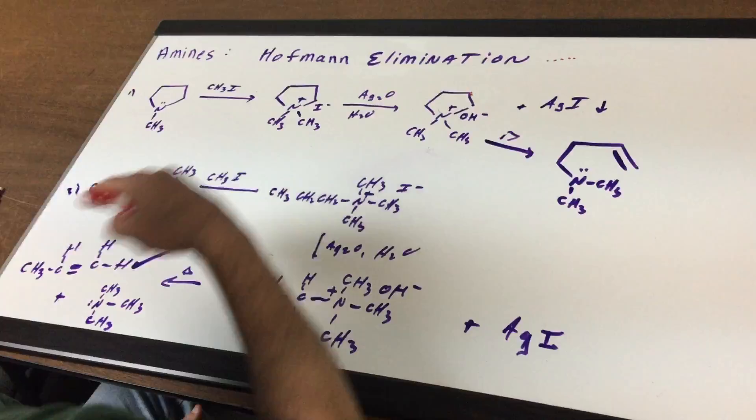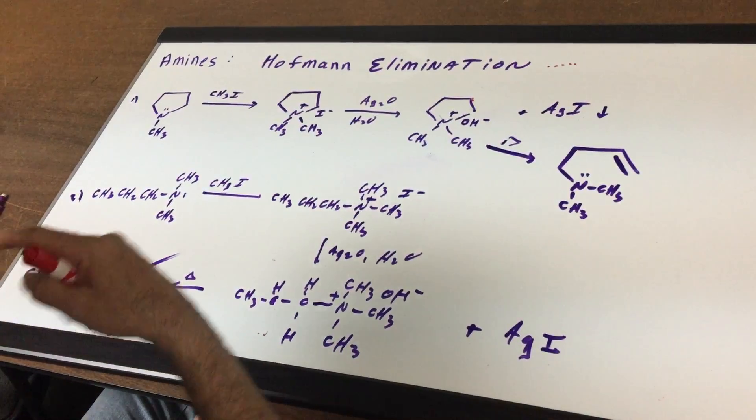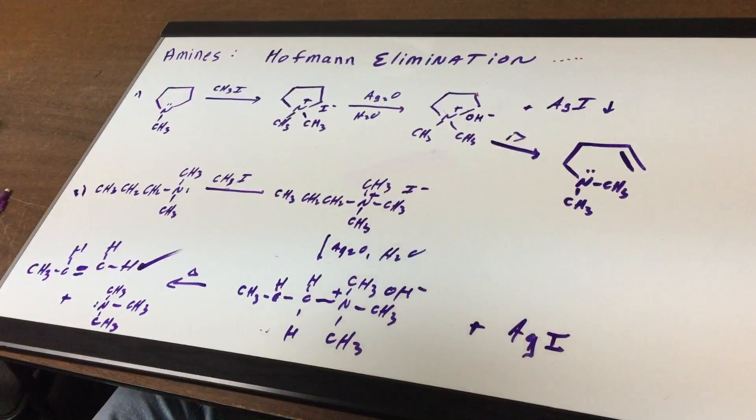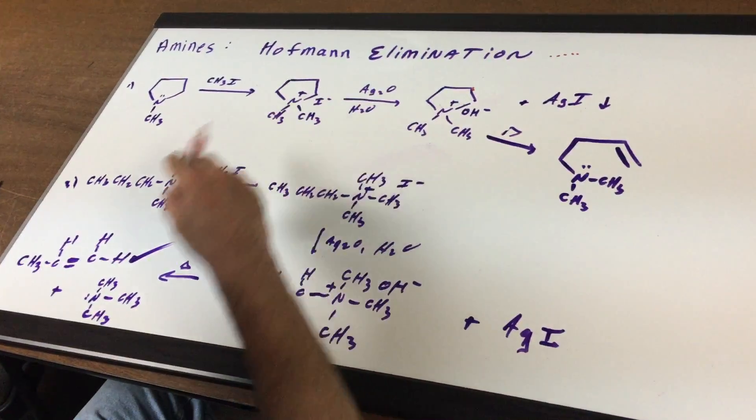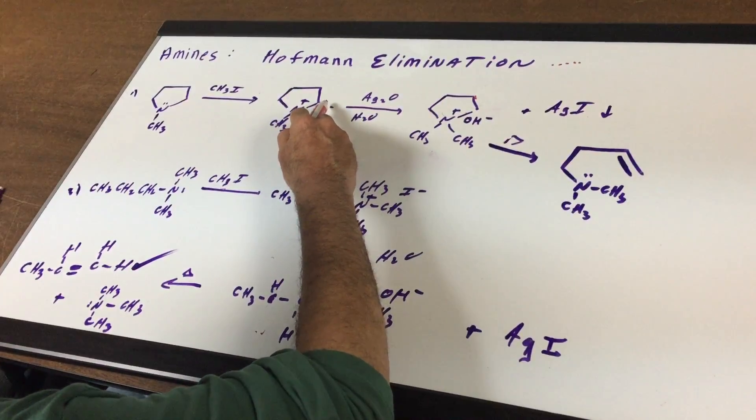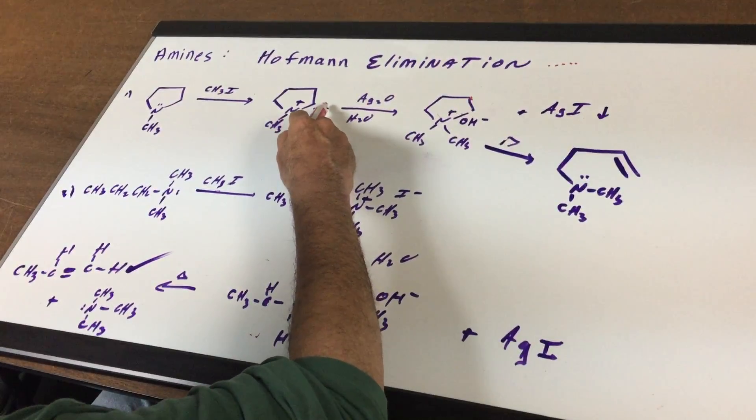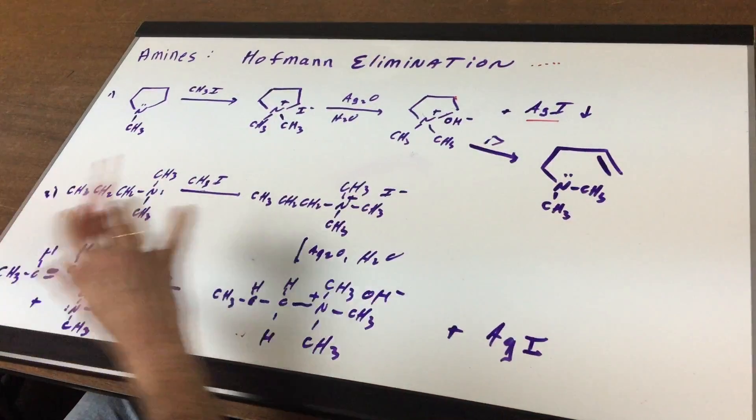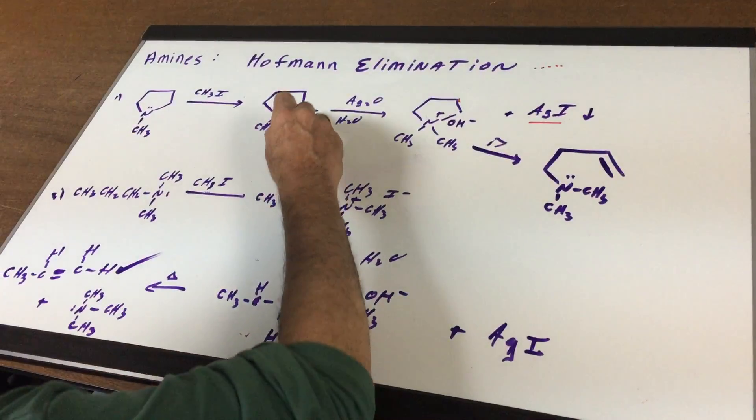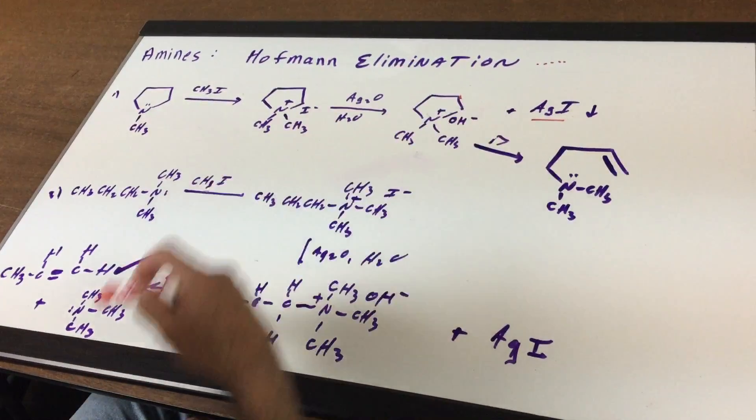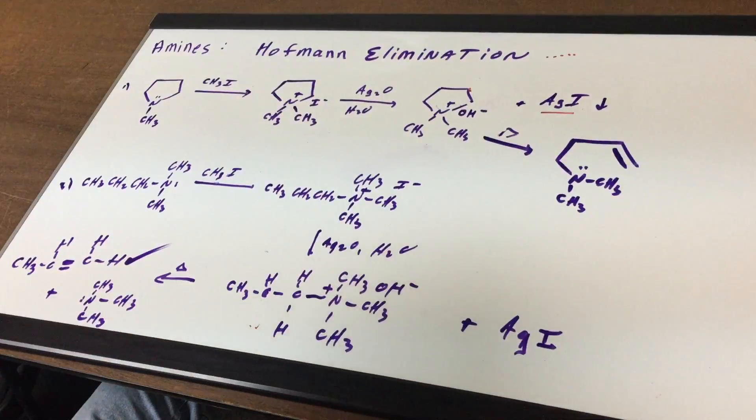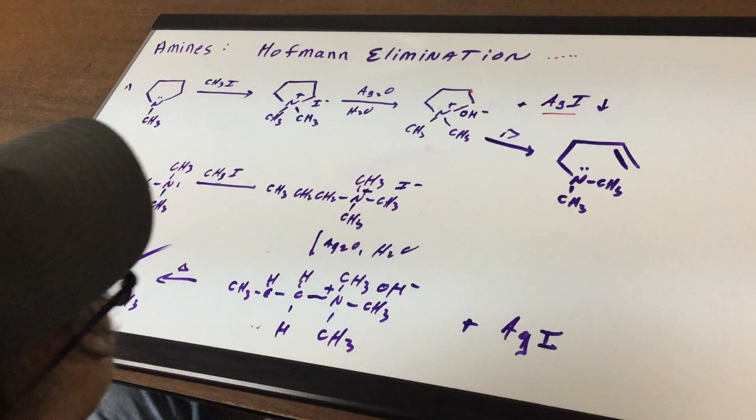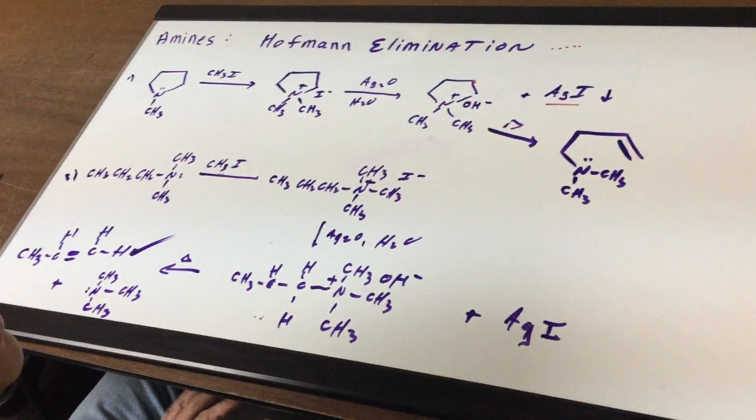Notice the ammonium iodide salt here. We have a plus on the nitrogen and a minus on the iodine. Then I'm going to treat it with AG2O in water. The silver is going to remove the iodine to give you AGI, and that's a precipitate which drives the reaction forward. You'll just swap the I-minus for an OH-minus which came from the water.